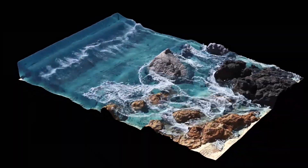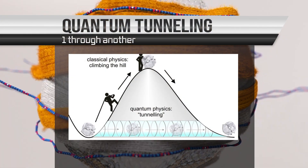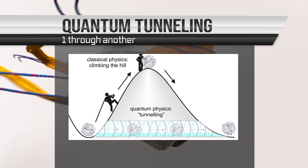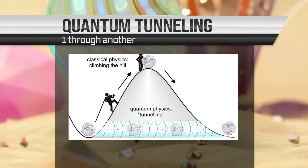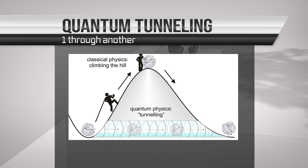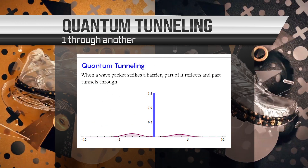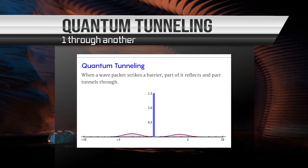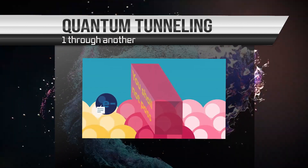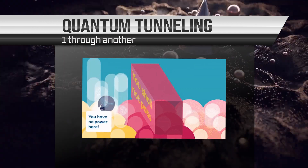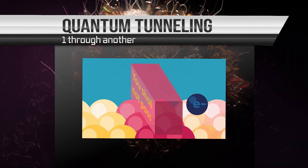Quantum tunneling is a phenomenon in which a quantum object can pass through a barrier that it should not be able to pass through according to classical physics. This can happen because the object has a non-zero probability of being found on the other side of the barrier, even if it has no energy to overcome the barrier. This has been observed in experiments with particles passing through potential barriers.